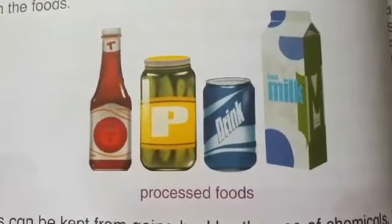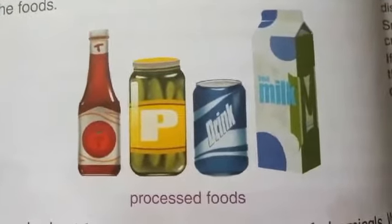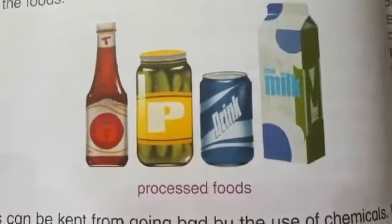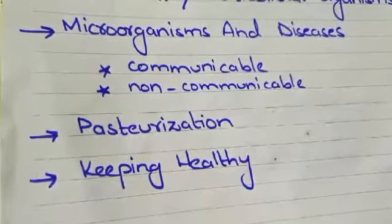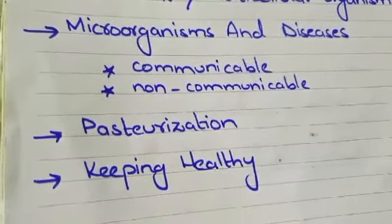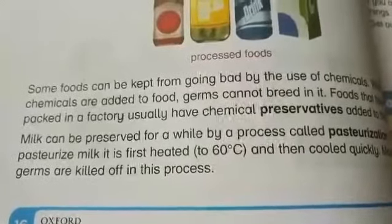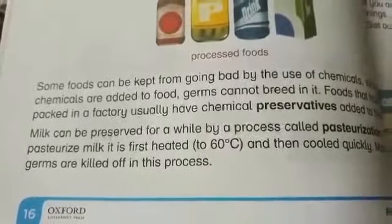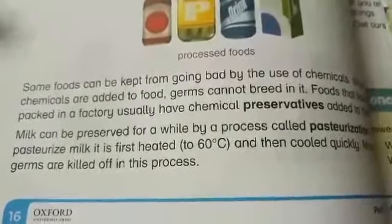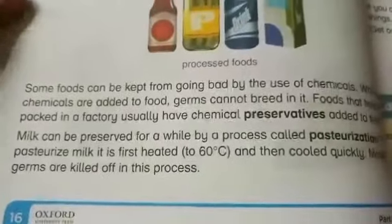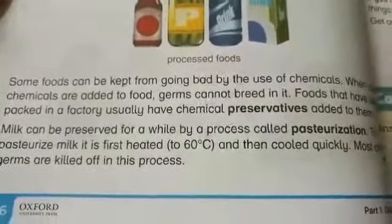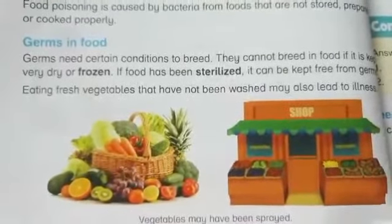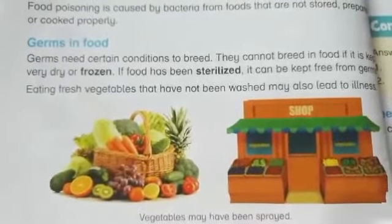If we want to make our food free from any kind of microorganisms, there are processes used for this. One process is called pasteurization, in which milk is first heated up to 60 degrees centigrade and then quickly cooled — most of the germs are killed off in this process. Another way to preserve our food is sterilization, which keeps our food free from microorganisms.